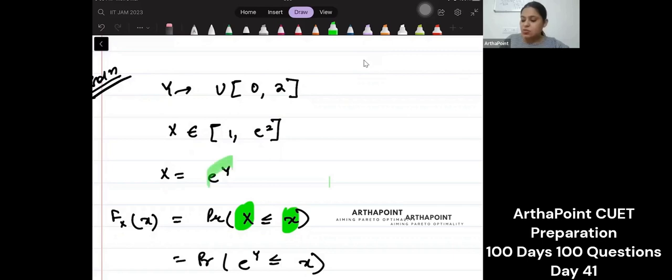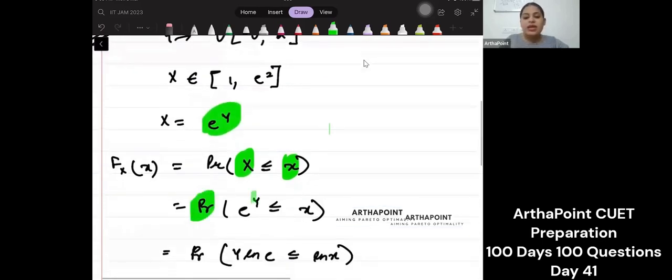Now capital X is given to me as e to the power y. So I say probability e to the power y is less than equal to small x.